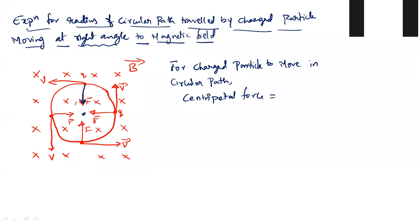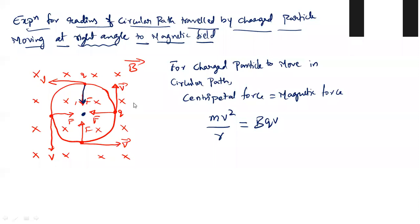The magnetic force is acting towards the center of the circular path, so we write centripetal force equals magnetic force. Centripetal force is MV²/R, that is equal to magnetic force BQV sin theta. Since the particle entered the magnetic field at right angles, theta equals 90°, and sin 90° equals 1.